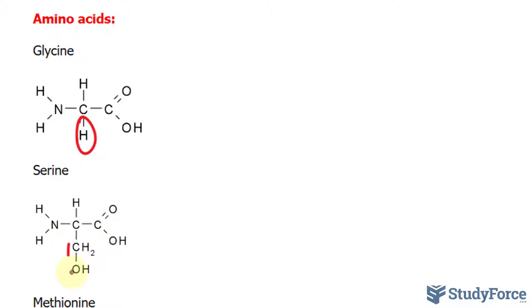Serine looks like this, that's the R group once again. And what happens is a bond forms between this part of glycine and this part of serine, the left side.